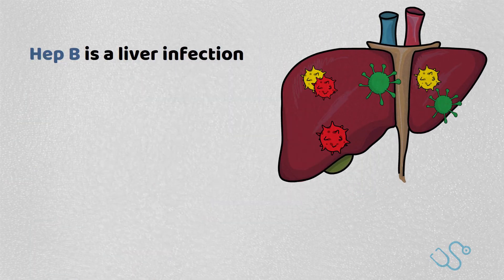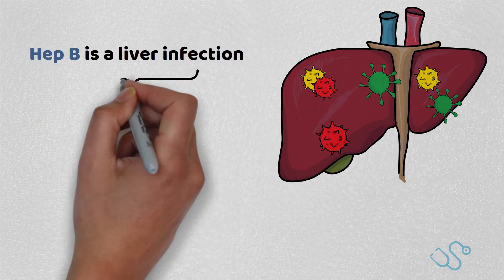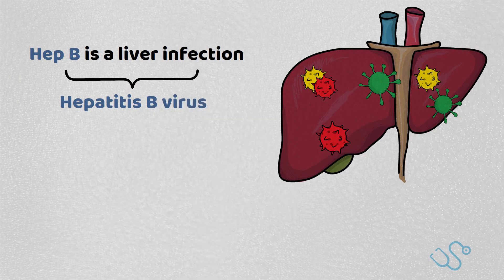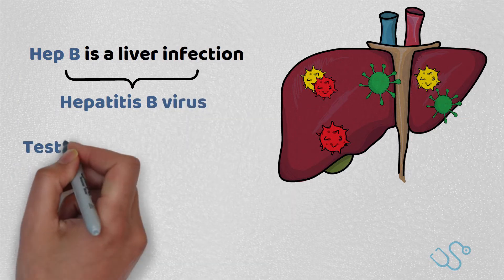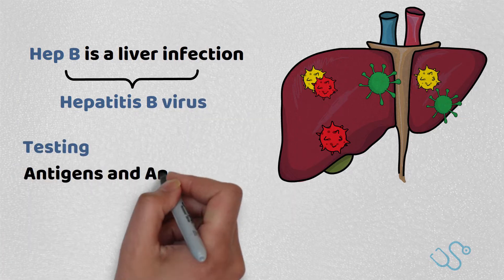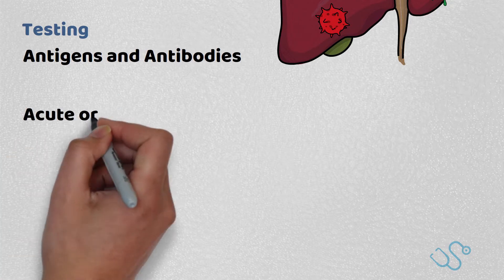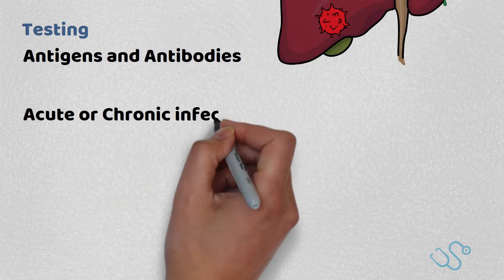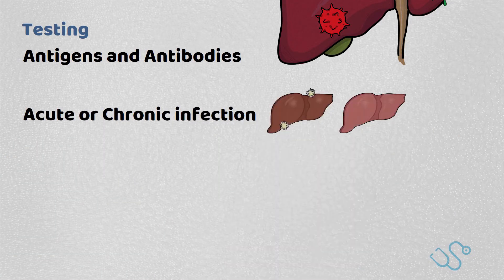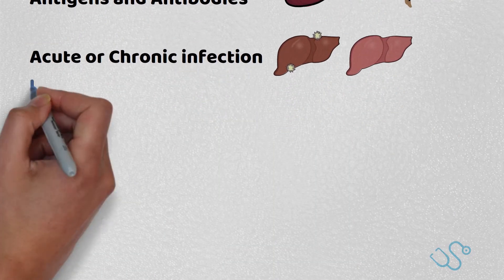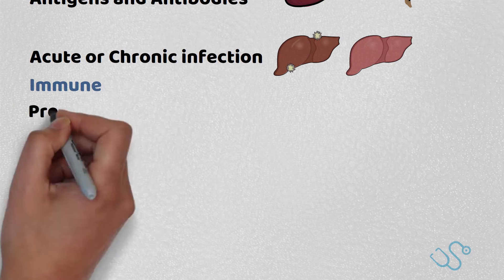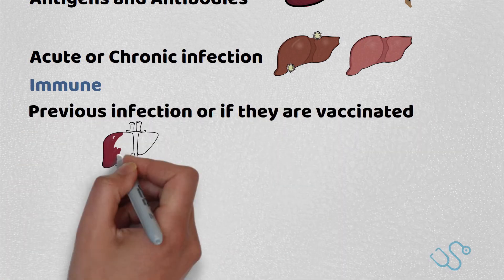Hepatitis B is a liver infection caused by the hepatitis B virus, and testing serology involves looking at the presence of antigens and antibodies to give you an idea of whether the patient has an acute or chronic infection versus whether they're immune from a previous infection or if they're vaccinated.